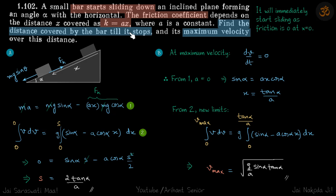So let's write the two forces on the bar parallel to the plane. mg sin theta will be downwards and fk sliding friction will be backwards.